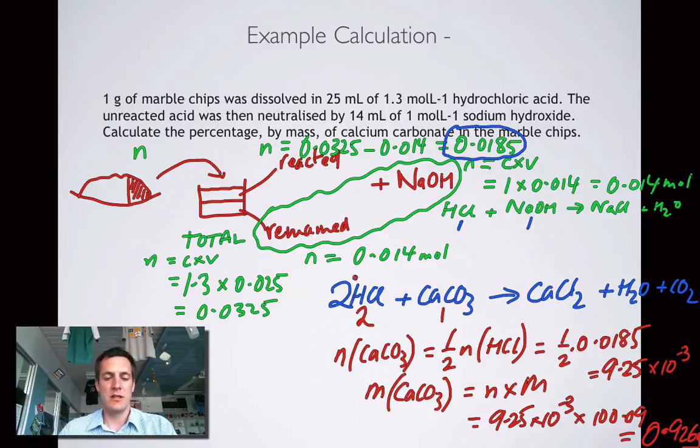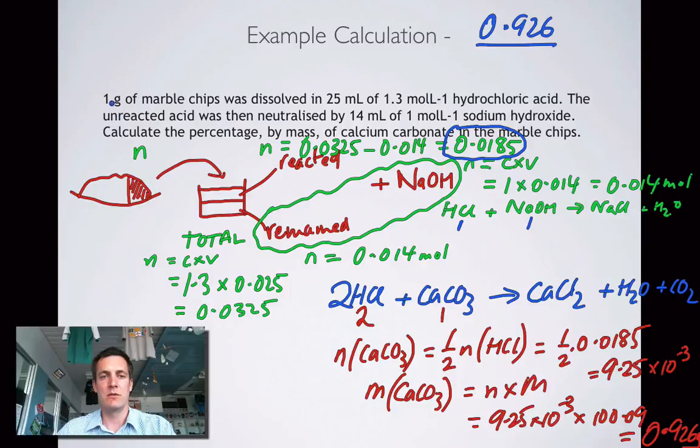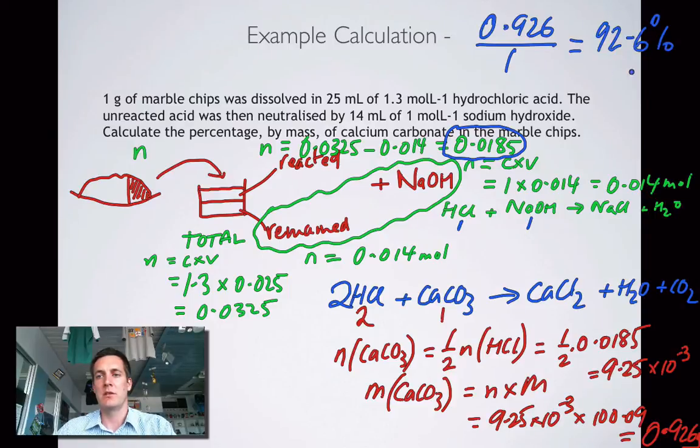Now, the last bit is lovely and easy. I'm going to put it up here. 0.926 grams over, how much do we have to start with? 1 gram. And hopefully you can do that in your head. That's 92.6%. So there's our answer. That's the percentage purity of our substance.